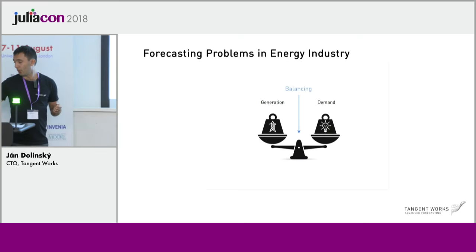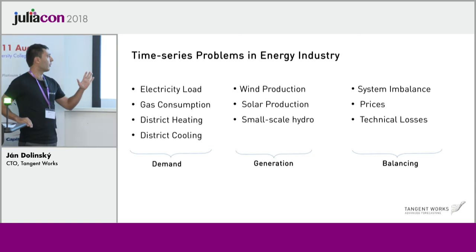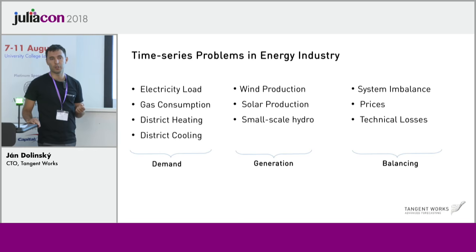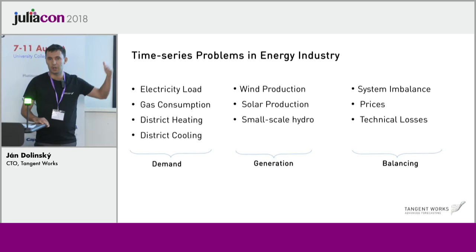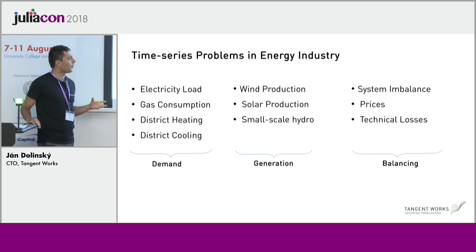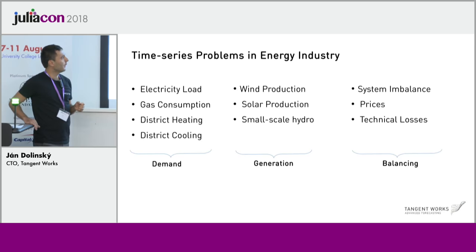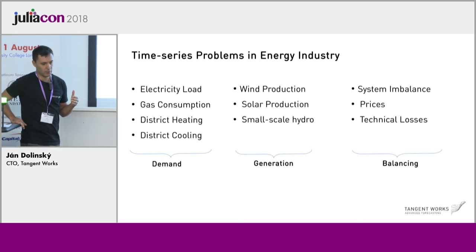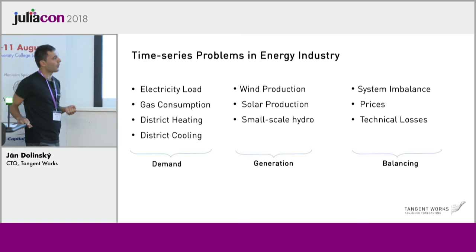Forecasting problems in the energy industry can be divided as follows. There is a demand side — electricity load — where you want to forecast on all levels of aggregation: a single building, a single household, an entire city, entire countries. Then there is gas consumption, district heating and cooling problems. There is a generation side: wind production forecasting, solar production forecasting, small-scale hydro forecasting. And then balancing itself has challenges like system imbalance forecasting, prices forecasting, and technical losses forecasting.